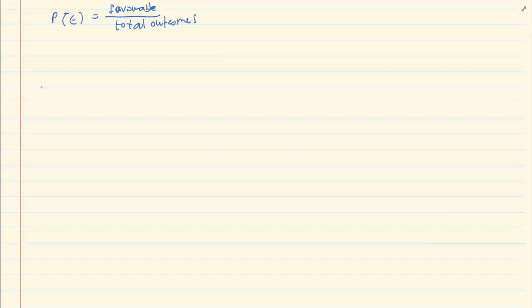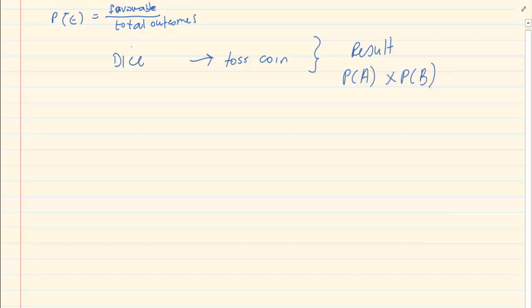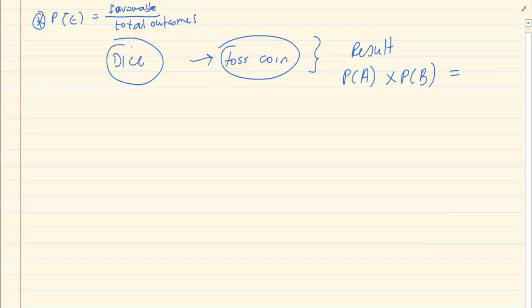All this time we always worked with one event — you threw the dice, or maybe took out a ball from a bag. But now, what happens when we start getting more than one event? That means something like throwing a dice and then tossing a coin. The final result is based on the probability of A times the probability of B — the probability of the first thing happening times the probability of the second thing happening.